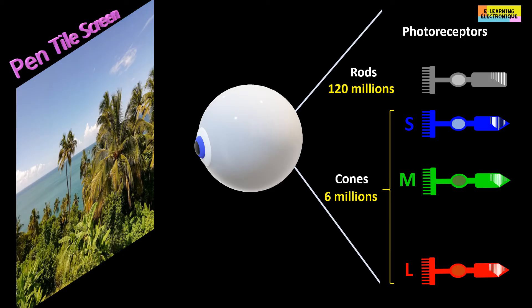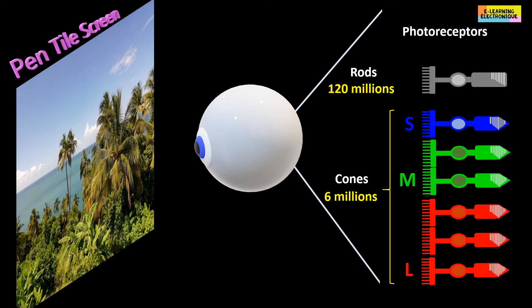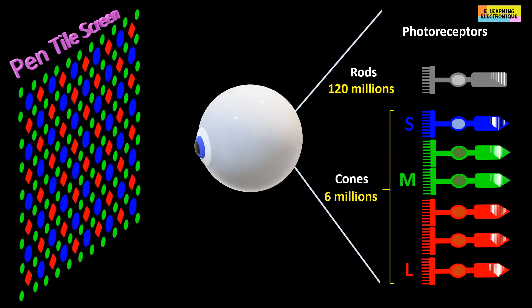The number of cones is different depending on the type of color. The blue cones are the least frequent then comes the green cones while the red cones are the most frequent. From these observations some manufacturers propose to reproduce in a screen the same principle as the photosensitive cells of the retina by modifying the distribution and size of sub-pixels in a screen.